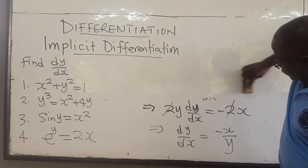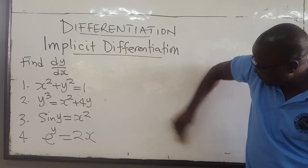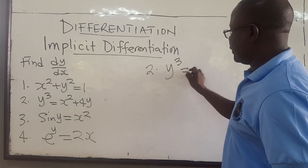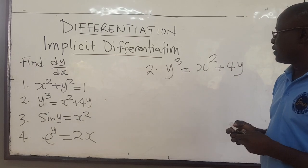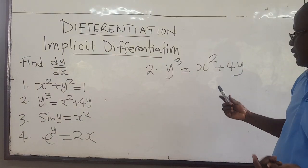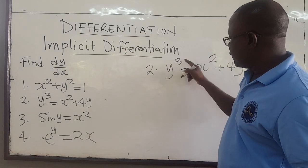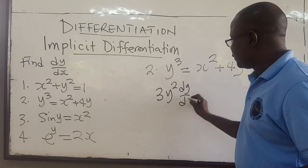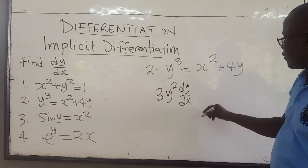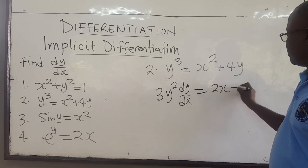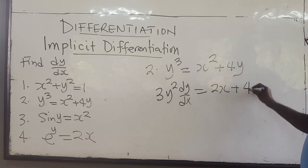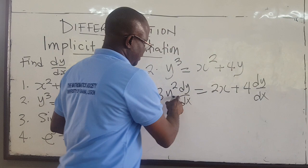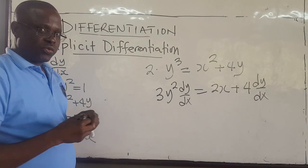Number 2: y cubed equals x squared plus 4y. Here, we can't isolate y, so how do you find dy/dx? Find the derivative of y cubed — this gives 3y squared, and remember to multiply by dy/dx because y is considered a function of x. The derivative of x squared is 2x, and the derivative of 4y is 4 dy/dx. So now I have dy/dx here and dy/dx there, so I combine them and factor dy/dx out.